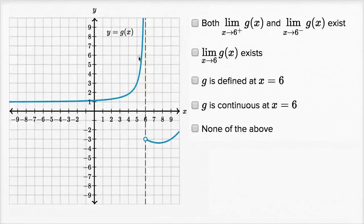We have the graph of y equals g of x right here. What I want to do is check which of these statements are actually true and then check them off.